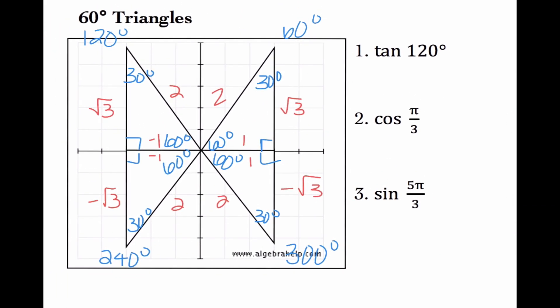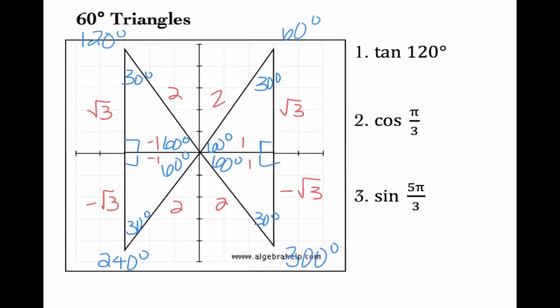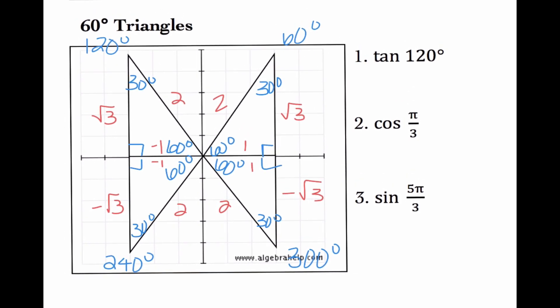So let's figure out our problems here. Tan of 120: I know 120 is over here, so I'm going off my reference angle. Tangent is opposite over adjacent. So I end up getting negative radical 3 over 1, which is negative radical 3. Cosine of pi over 3 — remember that's one-third of a semicircle, or if I multiplied by 180 over pi, I get cosine of 60 degrees. So cosine of 60 degrees is adjacent over hypotenuse, which is 1 over 2.